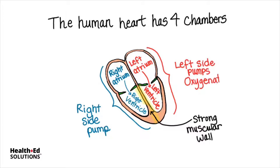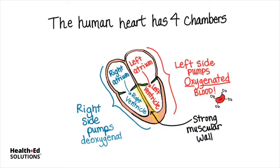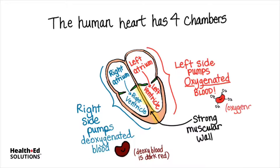The left side of the heart pumps oxygenated blood to all the body organs. I'm drawing here a bright red blood cell to indicate that it is filled with oxygen. The right side of the heart pumps deoxygenated blood. Notice that I'm making a darker red blood cell here to indicate that this is deoxygenated blood. Remember that deoxygenated blood is dark red and oxygenated blood is bright red.